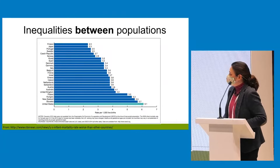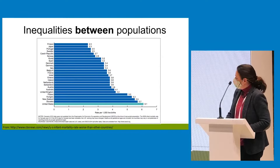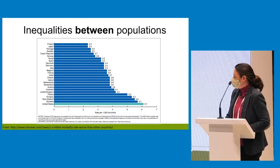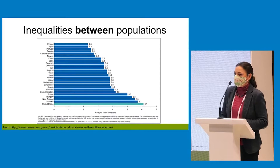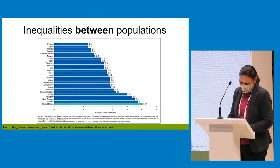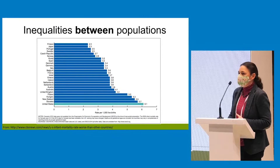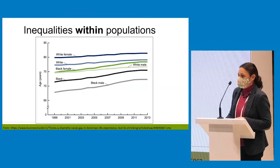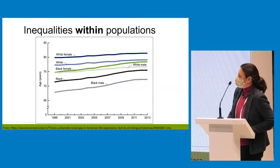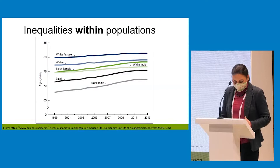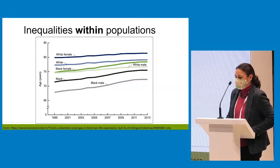As a social epidemiologist, I study differences between populations. This graph shows differences in infant mortality by country. We often study these things using complicated statistical procedures, but I won't bore you with those today. While this shows that there is a lot of difference in the level of infant mortality by country, it doesn't really tell us why. We also look at inequalities within populations — for example, this graph shows differences in life expectancy by race and gender in the United States — but again, it doesn't get at why this is the case.